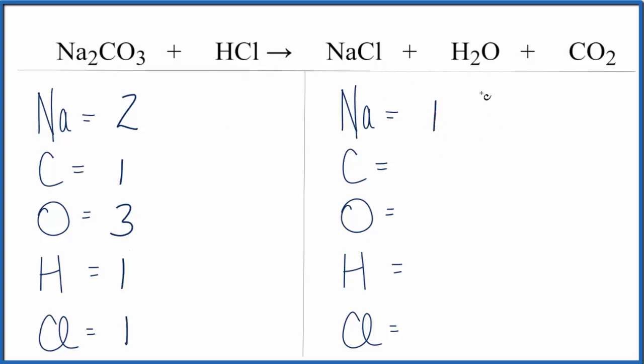On the product side, one sodium, one carbon, one oxygen here in the water, plus we have two oxygens in the CO2. So that's going to give us three oxygens, two hydrogens, and then we have one chlorine.